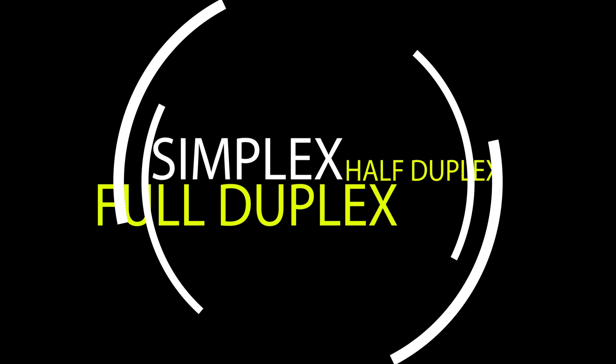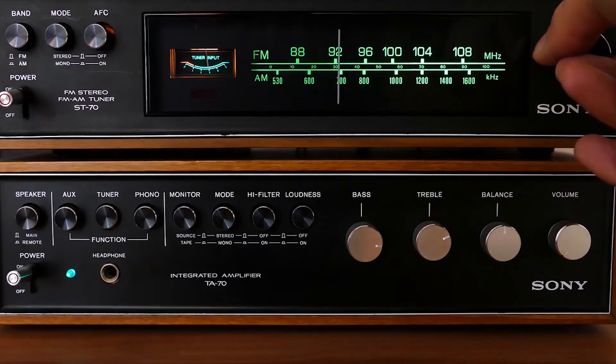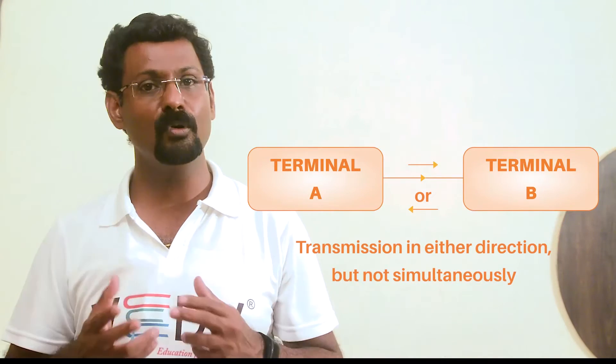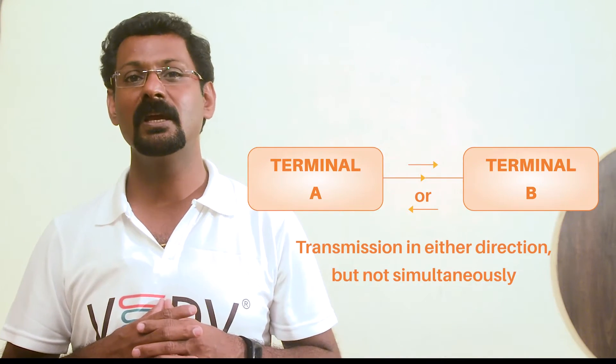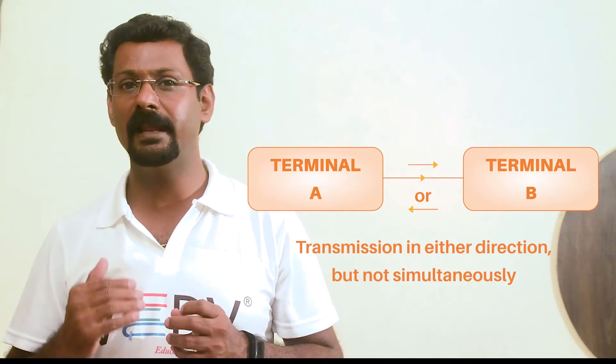Data communication modes: communication between two devices can be simplex, half duplex, or full duplex. Simplex: simplex is one-way data transmission. Examples are pager, radio, and television. Half duplex: in half duplex, each station can both transmit and receive messages, but not at the same time. It is like a one-lane road where traffic is allowed in both directions. Examples include walkie-talkies.